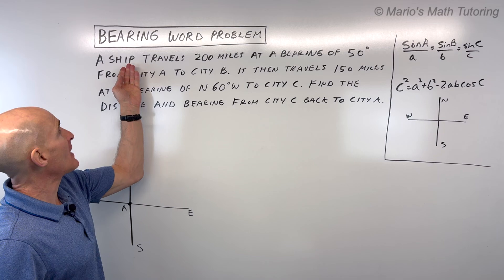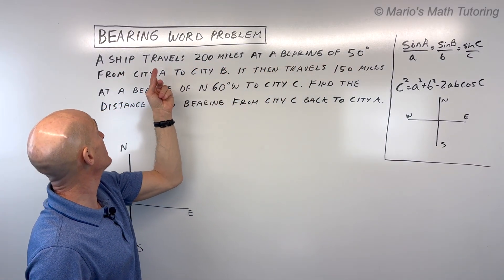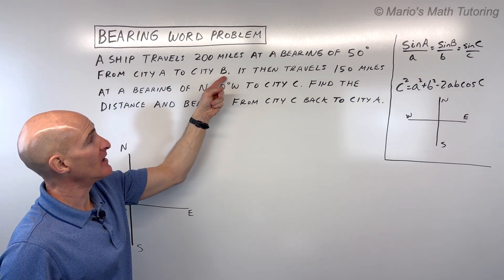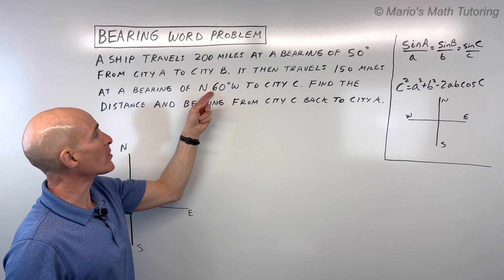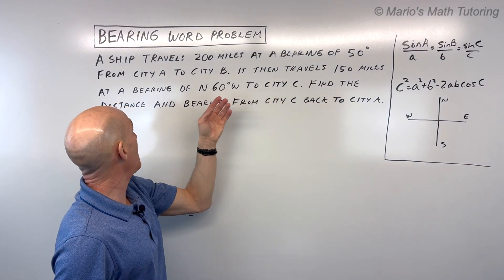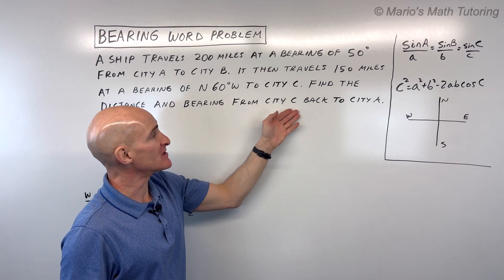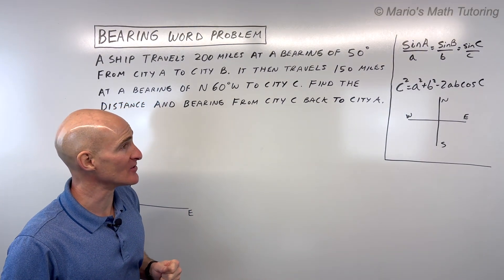So we've got a ship that's traveling 200 miles at a bearing of 50 degrees from city A to city B. It then travels 150 miles at a bearing of north 60 degrees west to city C. Find the distance and the bearing from city C back to city A. So there's a lot going on here you can see.